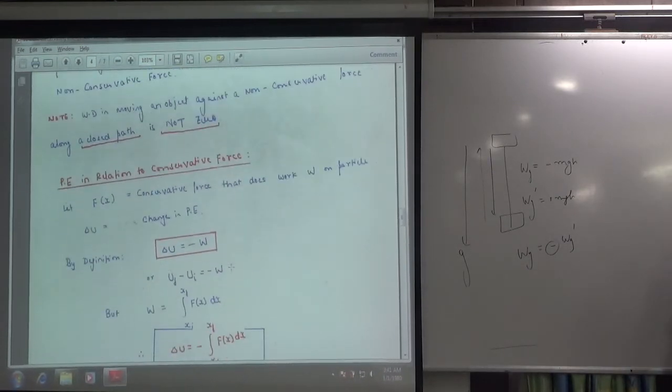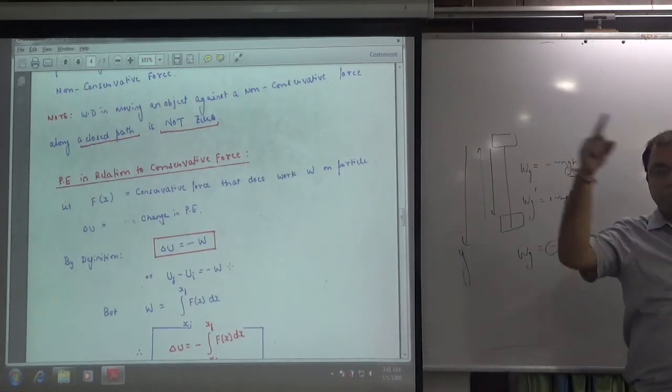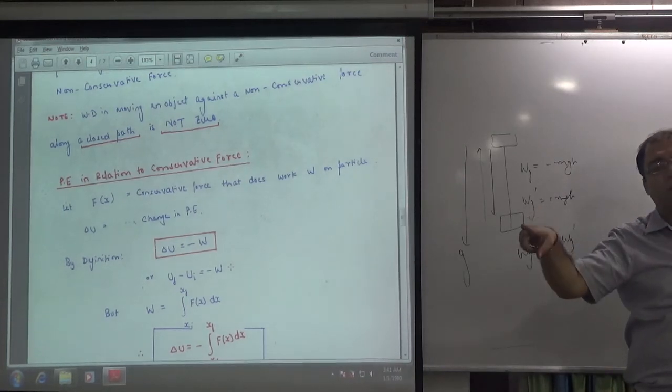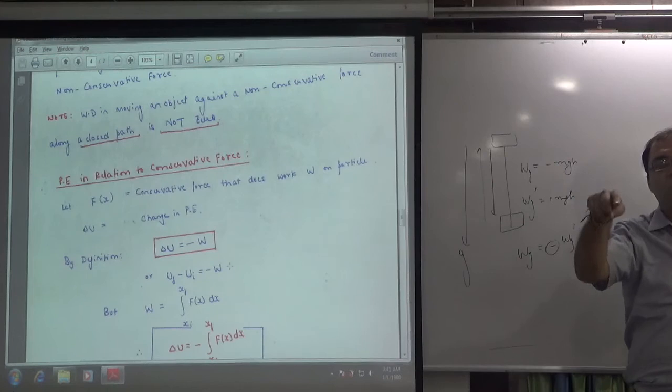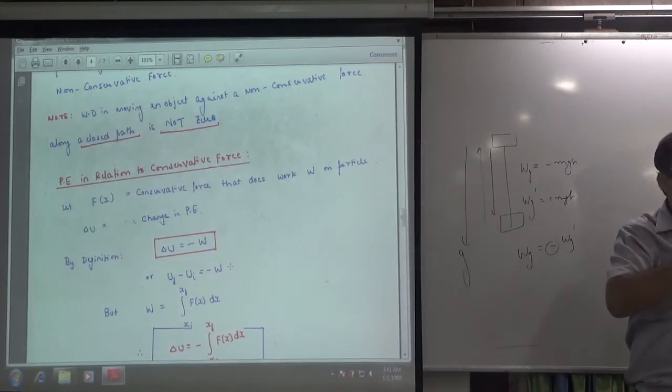An important note is that if you take a round path from one point and take it back to the same point, the net amount of work done in conservative force will be zero, but in non-conservative force will not be zero.